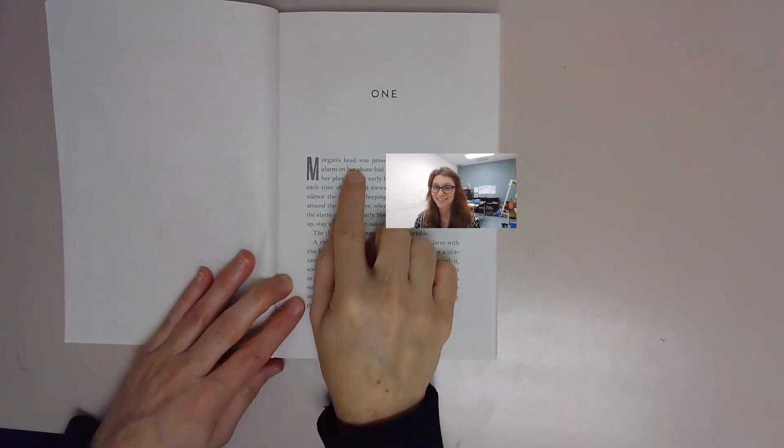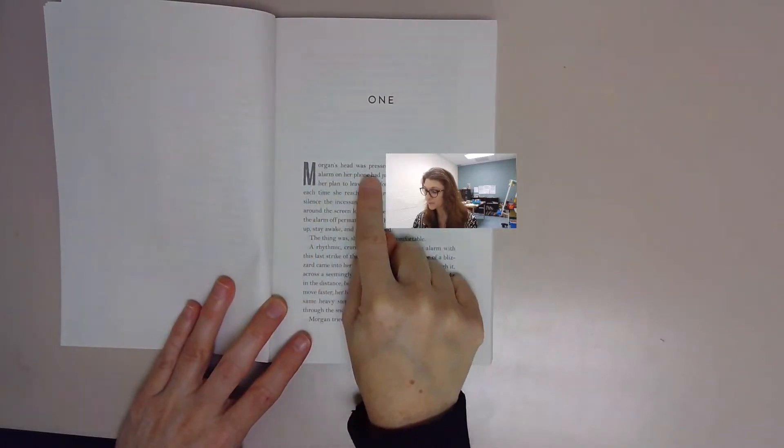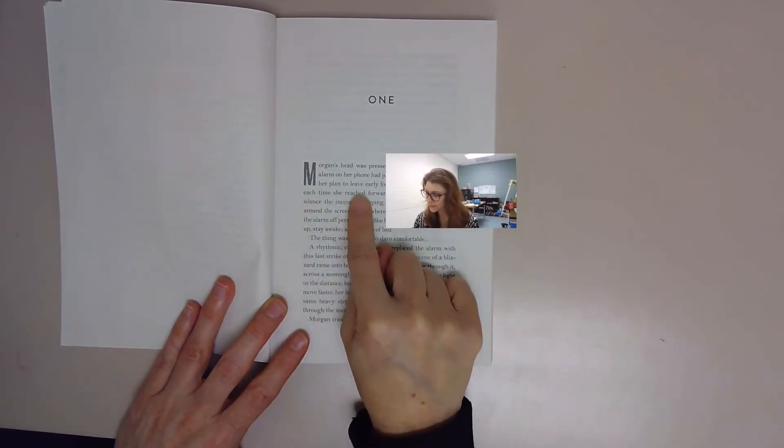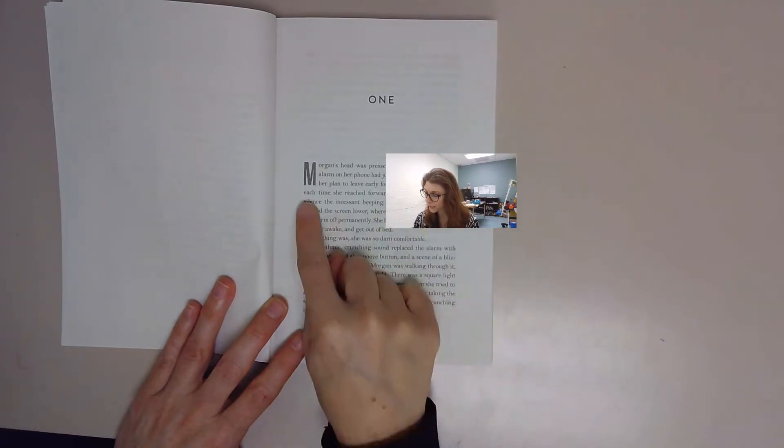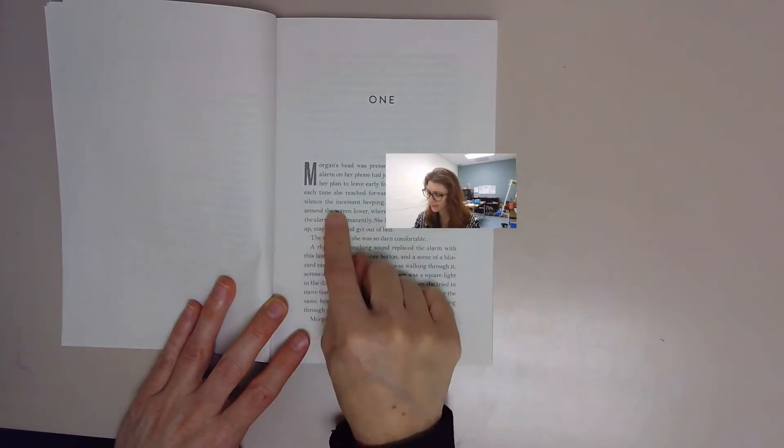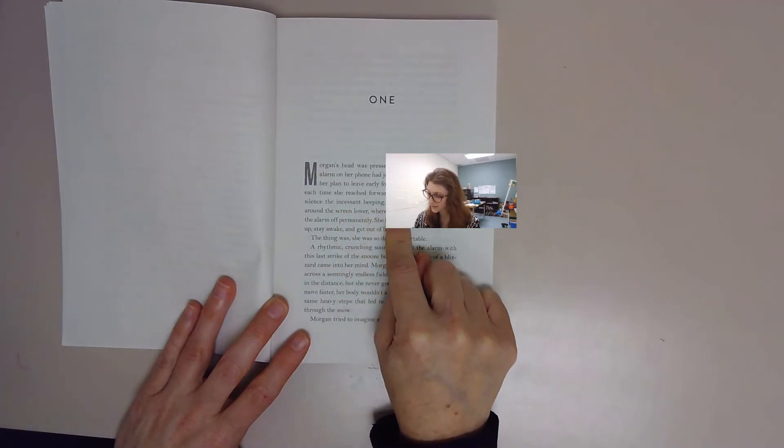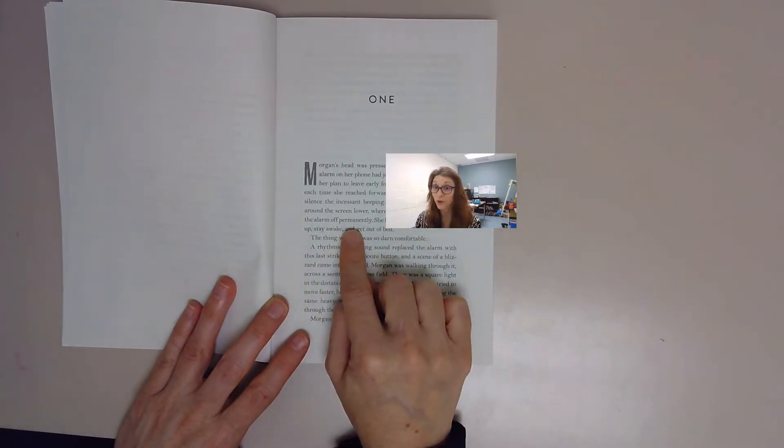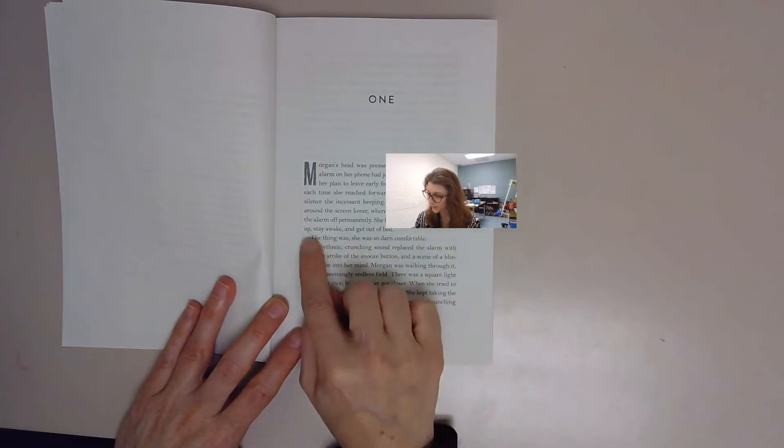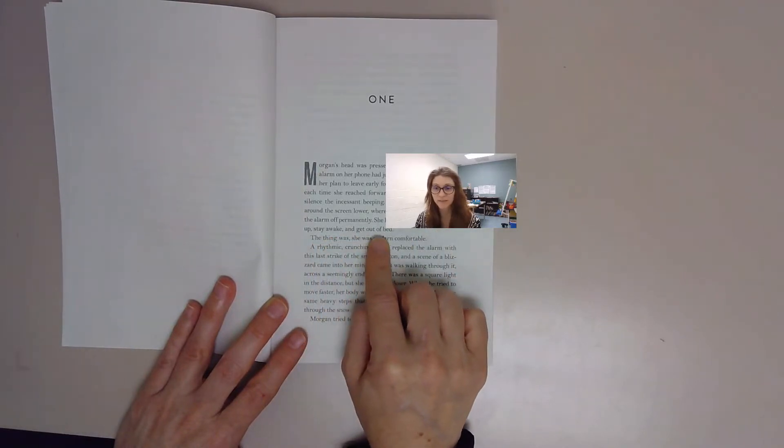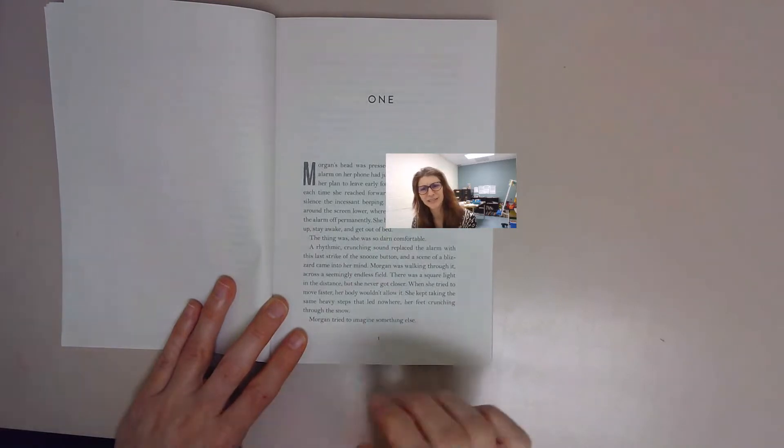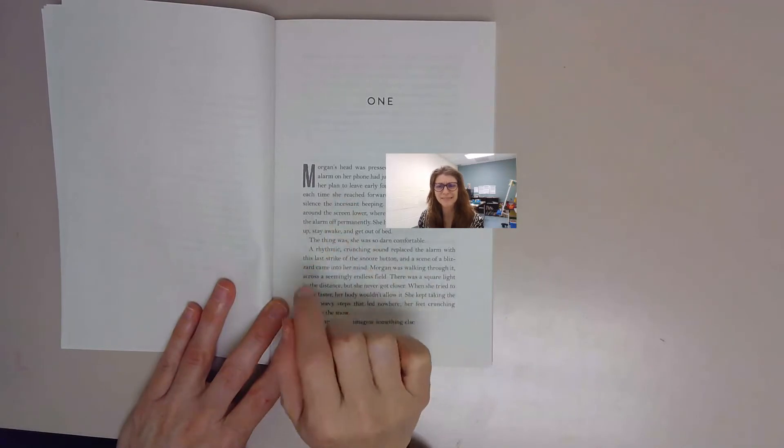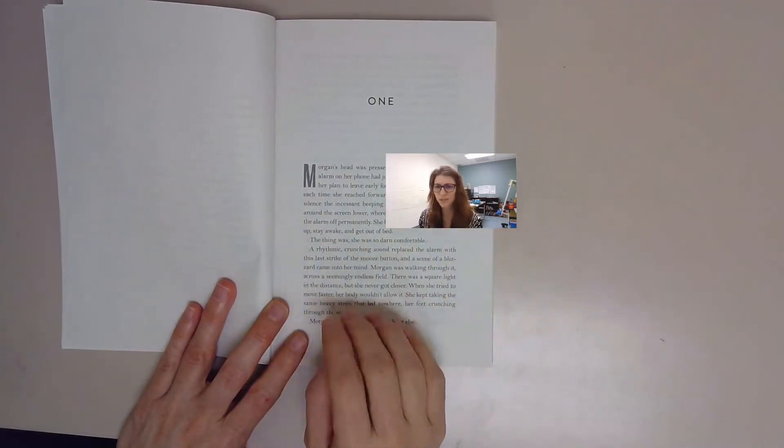Let us read Chapter One. Morgan's head was pressed against her pillow. The alarm on her phone had just been snoozed again, and her plan to leave early for school was slipping away. She refused to poke the screen lower where a simple touch would shut the alarm off permanently. She had good intentions to wake up, stay awake, get out of bed. That's how I felt this morning, first day back from spring break. I just wanted to keep hitting that snooze button. Morgan's having trouble getting out of bed.